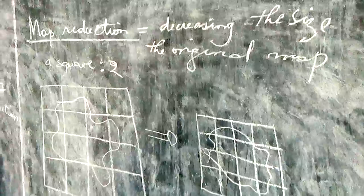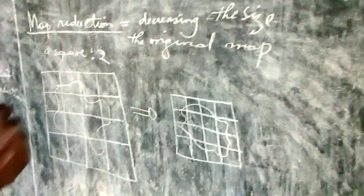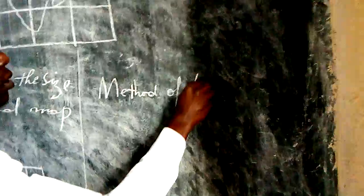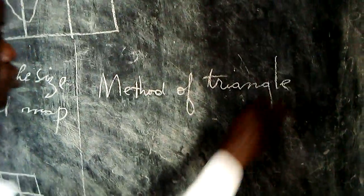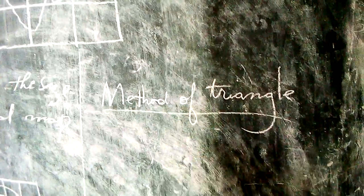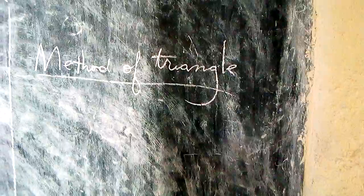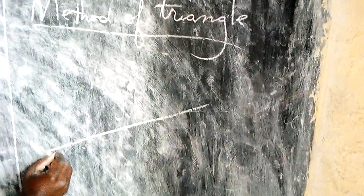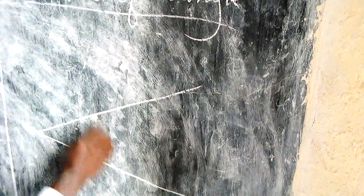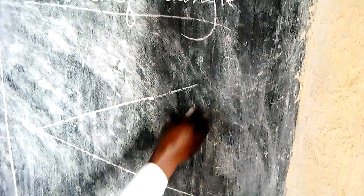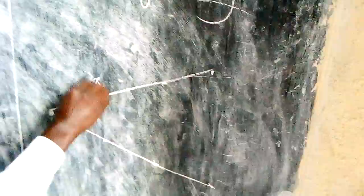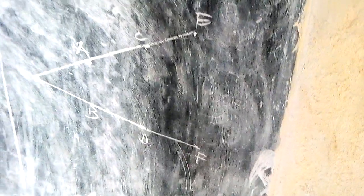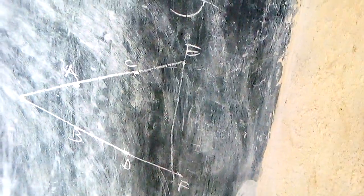We also have another method — the method of triangles. How do we use the method of triangles to enlarge and reduce a map? Here I have a point. We have points A, B, C, D, E, and F. When you look at this shape, you may find that it is a shape of a triangle, and as you know, a triangle is made of three sides.